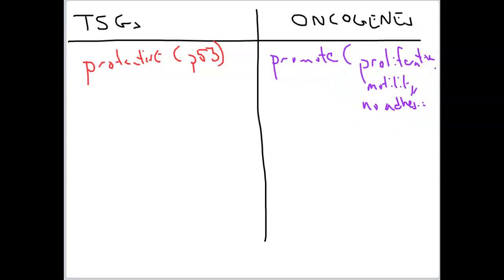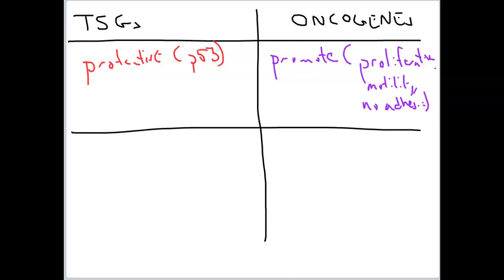These are our oncogenes — genes that encode proteins for proliferation, for motility, for a lack of adhesion. These are oncogenes because when expressed, these genes can lead to cancer-like traits in a cell. And if you get enough of these expressed together, you can certainly have a cell that is cancerous, if not also metastatic. So we have our protective genes, our tumor suppressor genes, that keep us from accumulating mutations, and then we have our oncogenes that encode cellular phenotypes that could accumulate to cause a cancerous cell to develop.